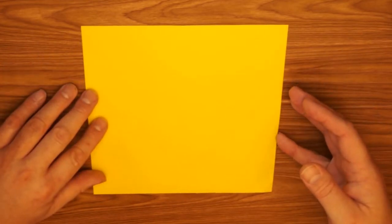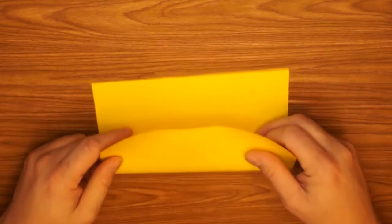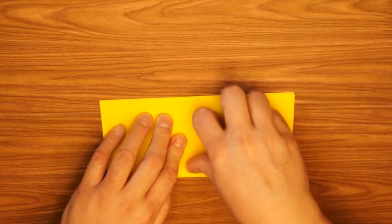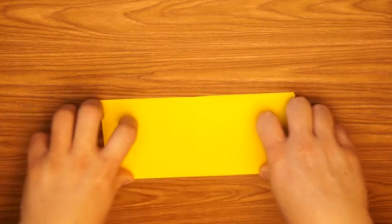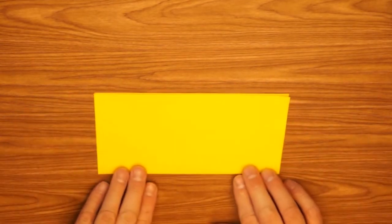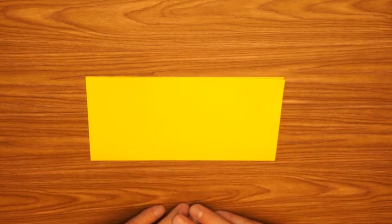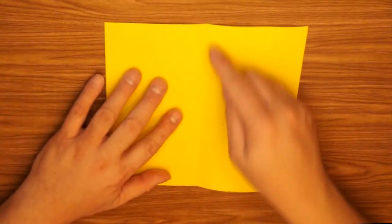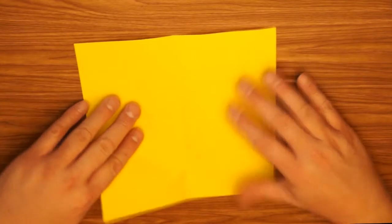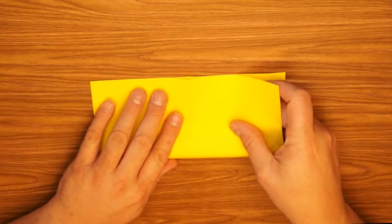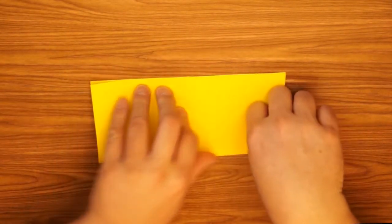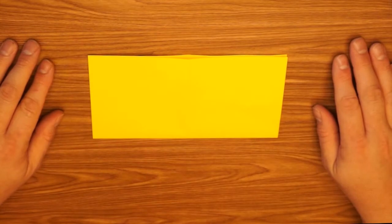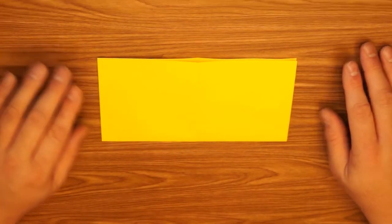We take our square. Fold it in half like a rectangle. Line up the edge as best you can and press down good on your folds. Open up the rectangle and turn it so that the crease is vertical. And fold the bottom to the top again.